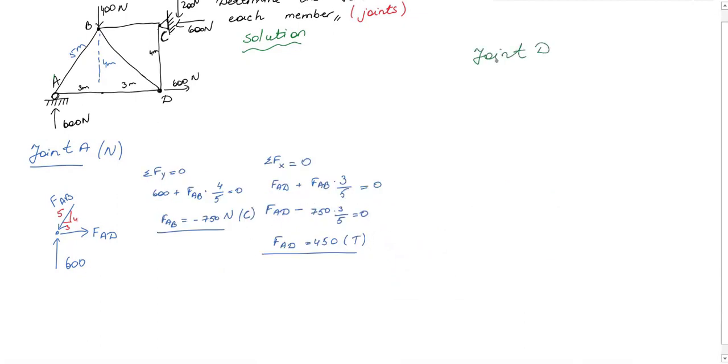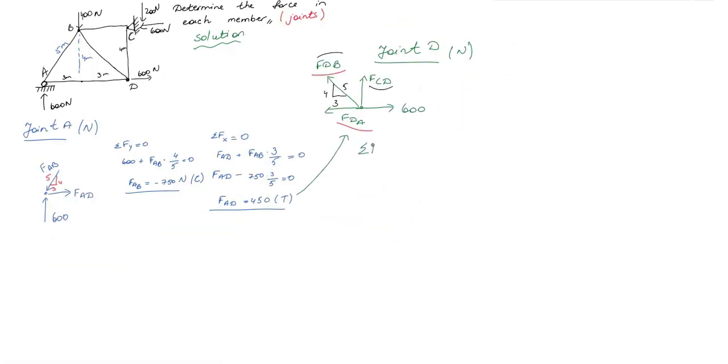Now let's calculate for joint D. All units will be in newtons. In joint D I have 600 Newton that was given to me, and FCD, FDA, and the diagonal force here. By the way, I know FDA because it is equal to FAD. I already calculated it. If I write equilibrium equation for x direction,